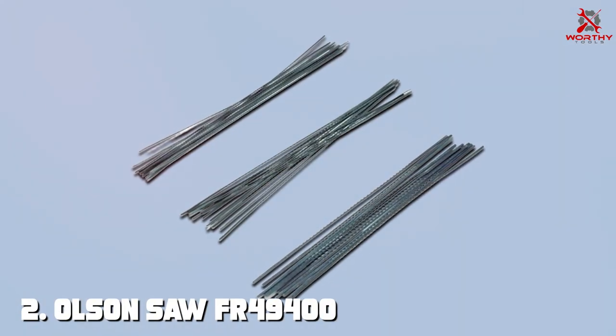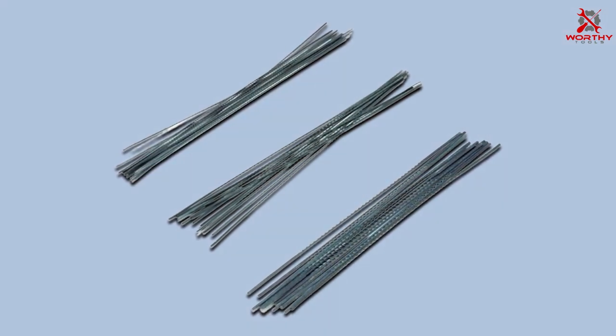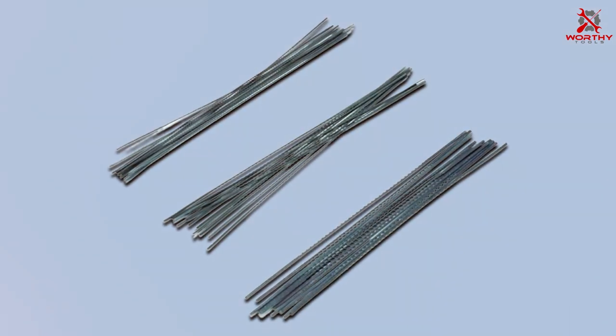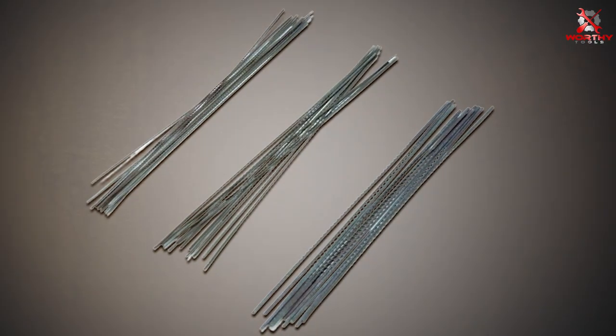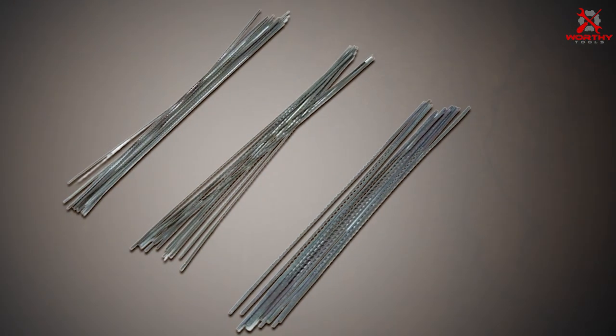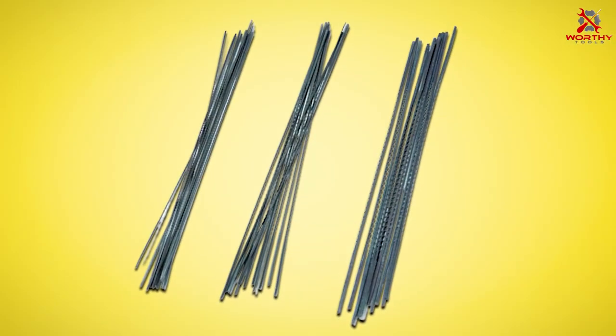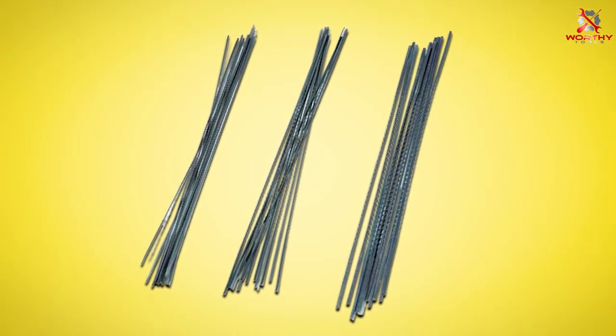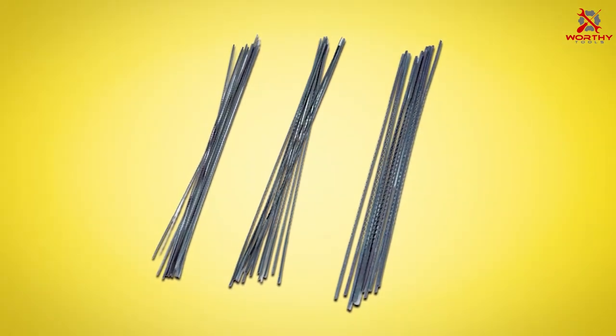Number two: Olsen Saw FR49000-400 Skip Tooth Scroll Saw Blade Assortment 36. The Olsen Saw FR49000-400 skip tooth scroll saw blade assortment emerges as a quintessential tool for woodworkers aiming to elevate their craft. This 36-piece set is designed with a skip tooth configuration, a feature that significantly enhances the cutting experience by ensuring smoother cuts and minimizing clogging.